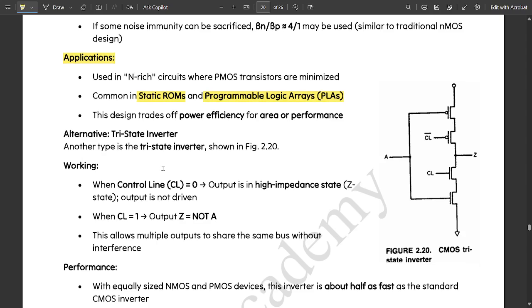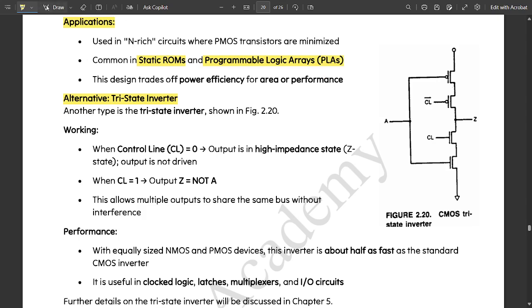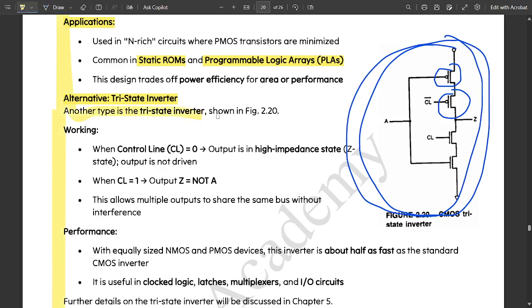Next, one more kind is alternate tri-state inverter. This figure we have already discussed. This is the diagram of a CMOS tri-state inverter where they have used two PMOS transistors with enable and enable bar. When this switch is on, this would be off, and when this is on, this would be off. These are connected invertedly, that's why this is called tri-state inverter.